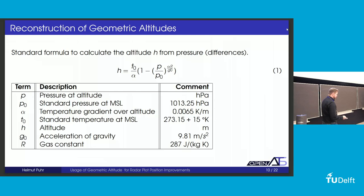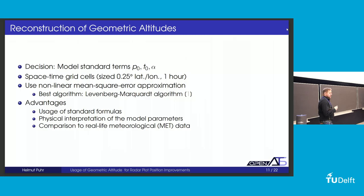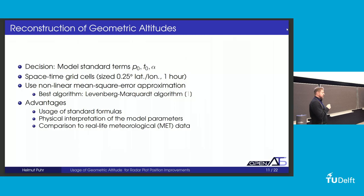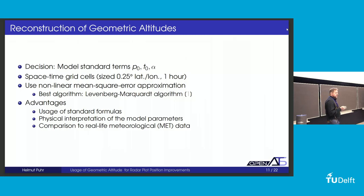If we want to reconstruct something, there are many things we can do with model fitting. We have a nonlinear formula and we want to approximate something. We chose pressure, temperature, and alpha value as parameters, so we can also compare these values to real-life data. We used this 24-hour data set, converted everything into space-time grid cells to ensure sufficient data in each cell. Then we used a nonlinear mean square error approximation to fit these parameters using a Levenberg-Marquardt algorithm — we tried different ones and this worked best.